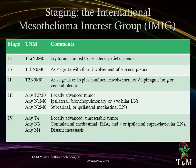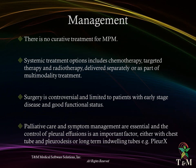Staging of mesothelioma: the International Mesothelioma Interest Group (IMIG) staging depends on pleural involvement, invasion, regional lymph nodes, and distant metastasis. Management: there is no curative treatment for malignant pleural mesothelioma. Systemic treatment options include chemotherapy, targeted therapy, and radiotherapy. Surgery is controversial and limited to patients with early-stage disease and good functional status. Palliative care and symptom management are essential, and control of pleural effusion may need long-term indwelling catheters.